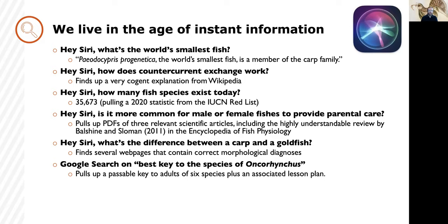In the last two decades, information has become cheap, ubiquitous, and surprisingly accurate. Here are the results from a short experiment I performed without getting out of my chair while writing this talk. Working through voice commands, my cell phone—a far more powerful computer than any I used as an undergraduate—was able to tell me the scientific name of the world's smallest fish, pull a precise statistic for the number of valid fish species currently known to science, locate an accurate and detailed explanation for how counter-current exchange works, and provide a correct diagnosis to separate goldfish (Carassius) from carp (Cyprinus). A typed query to Google found a passable dichotomous key to Oncorhynchus and an associated lesson plan.